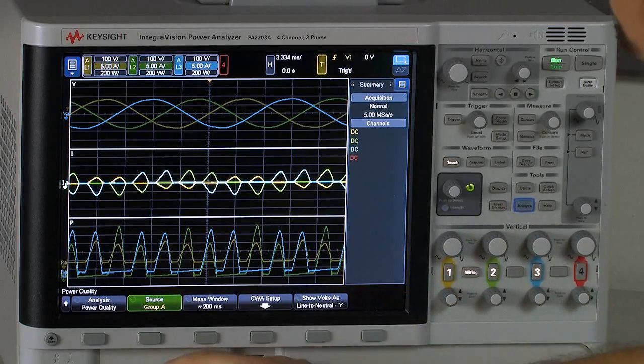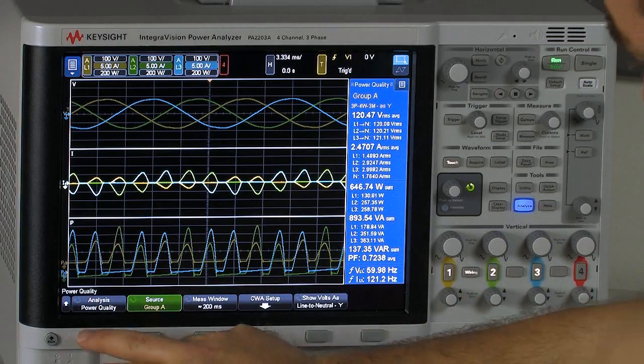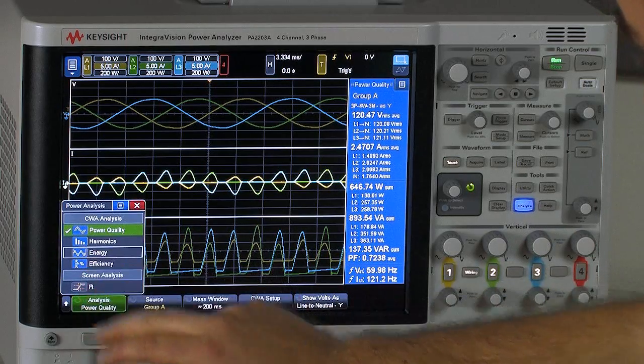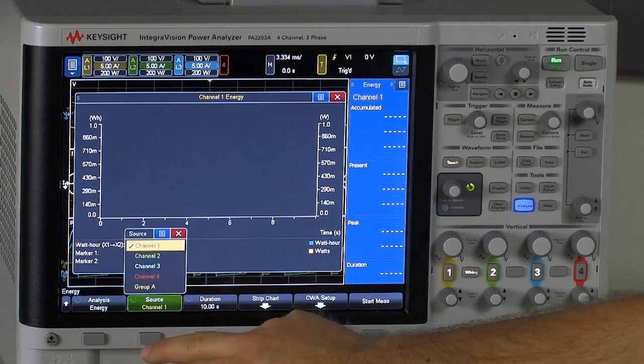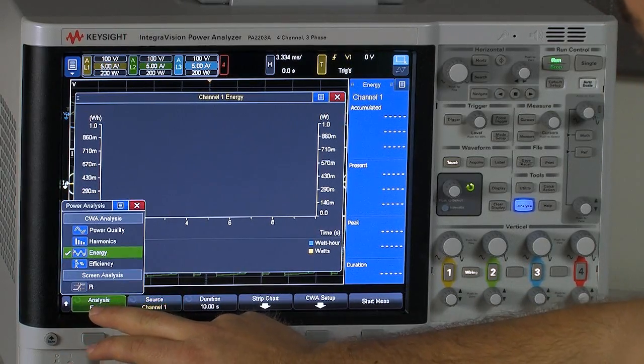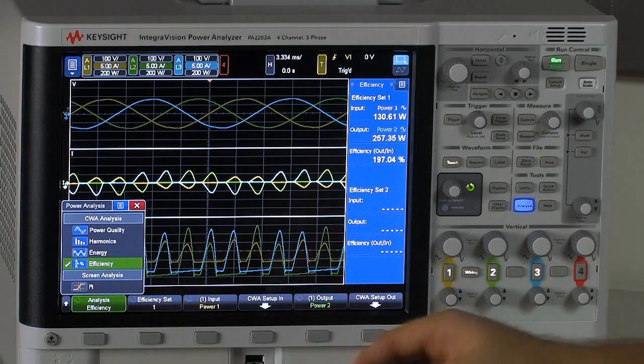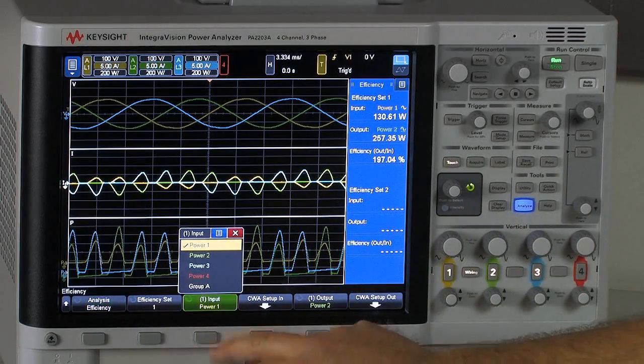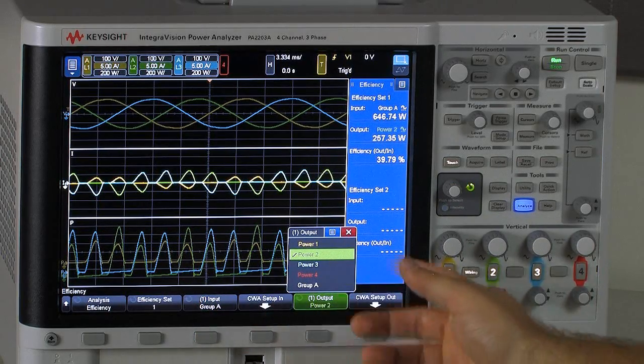Just to quickly highlight how group measurements are used in some other modes. You can see they also apply. So if I, they also apply in the energy mode, I can select that group as a source. We can also look at efficiency where I think this is probably one of the most powerful uses of group channels where I can both as an input and an output if I wanted to, I can select my group channels.